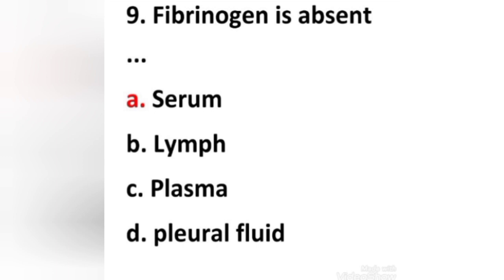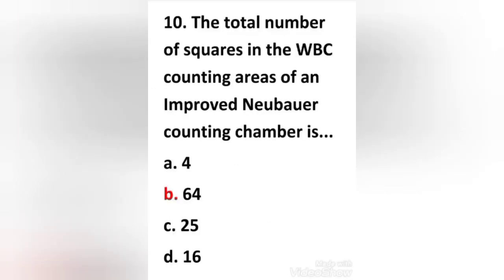Next question: Fibrinogen is absent in — (a) serum, (b) lymph, (c) plasma, (d) pleural fluid. Right answer is option A: serum. Fibrinogen is absent in serum.